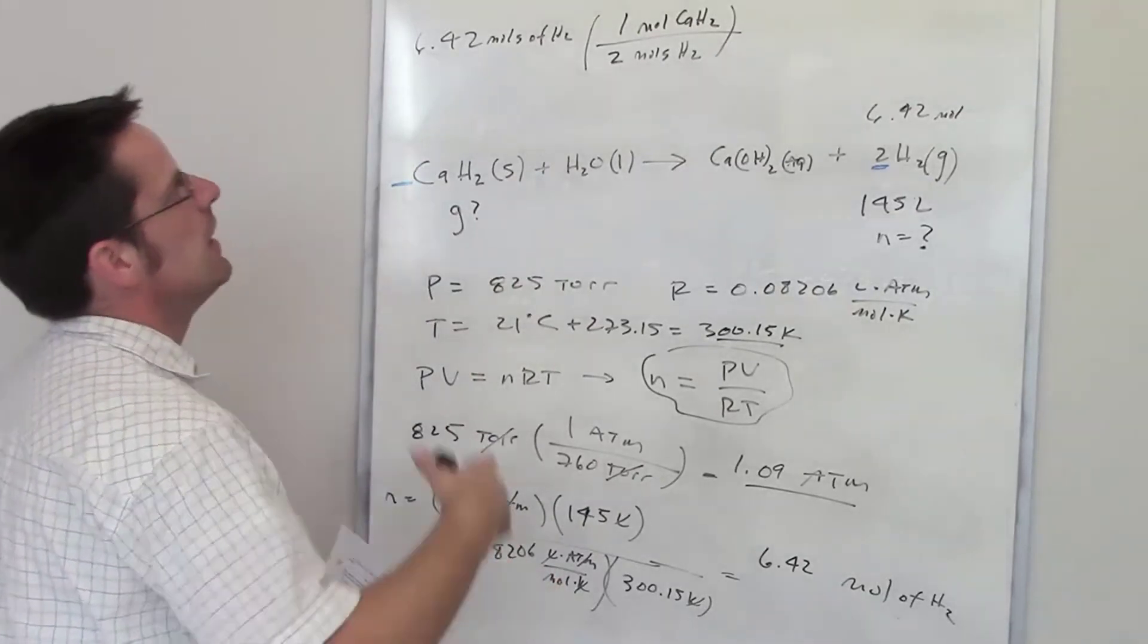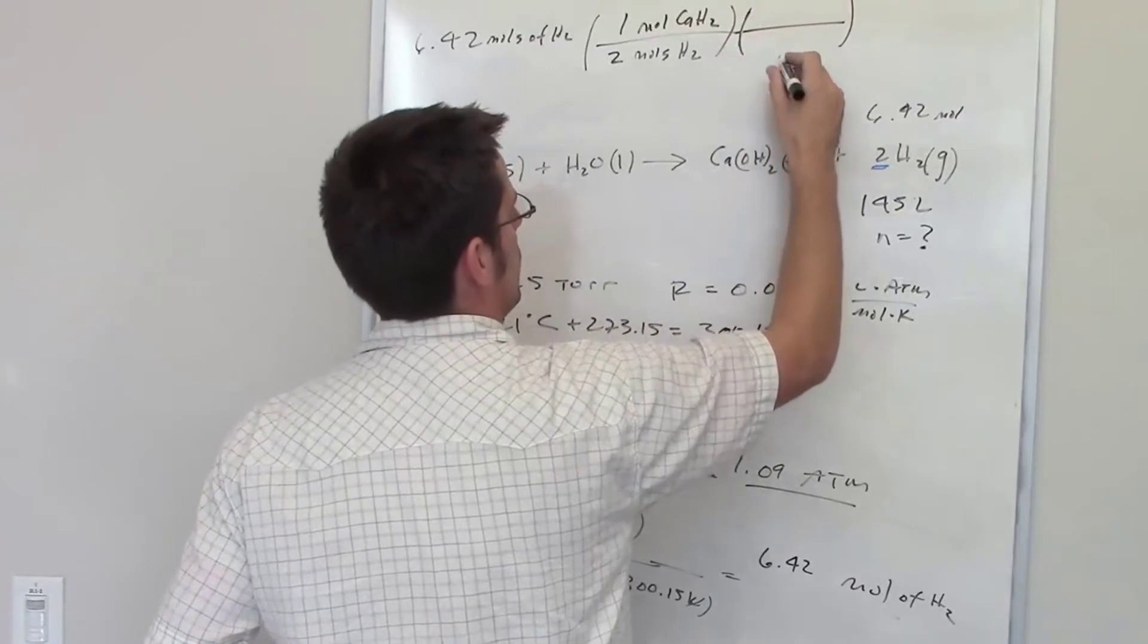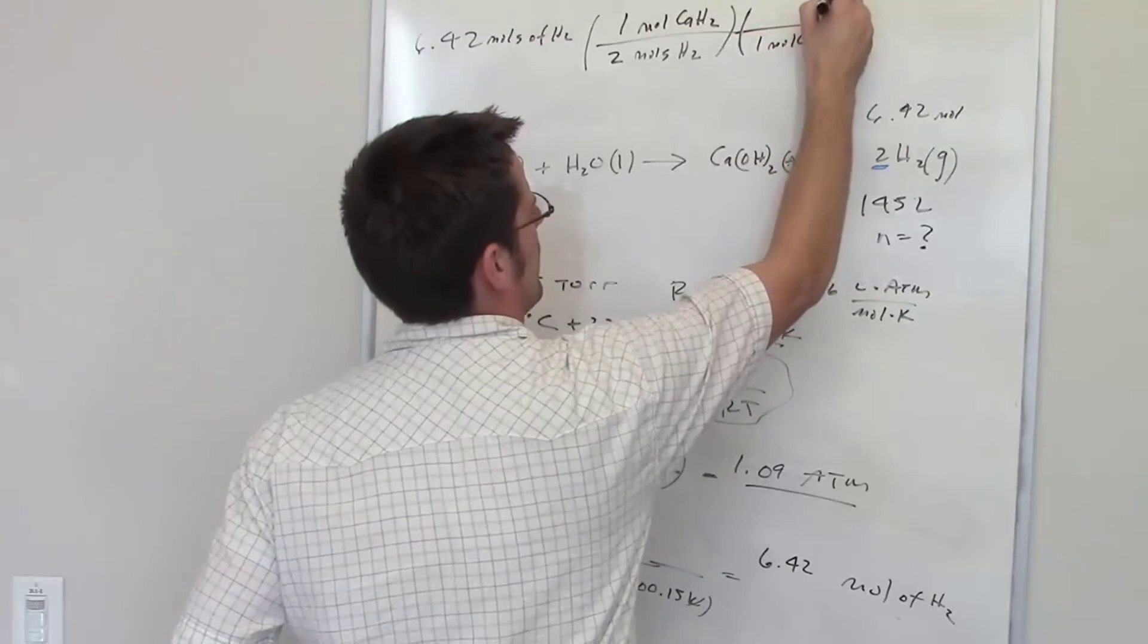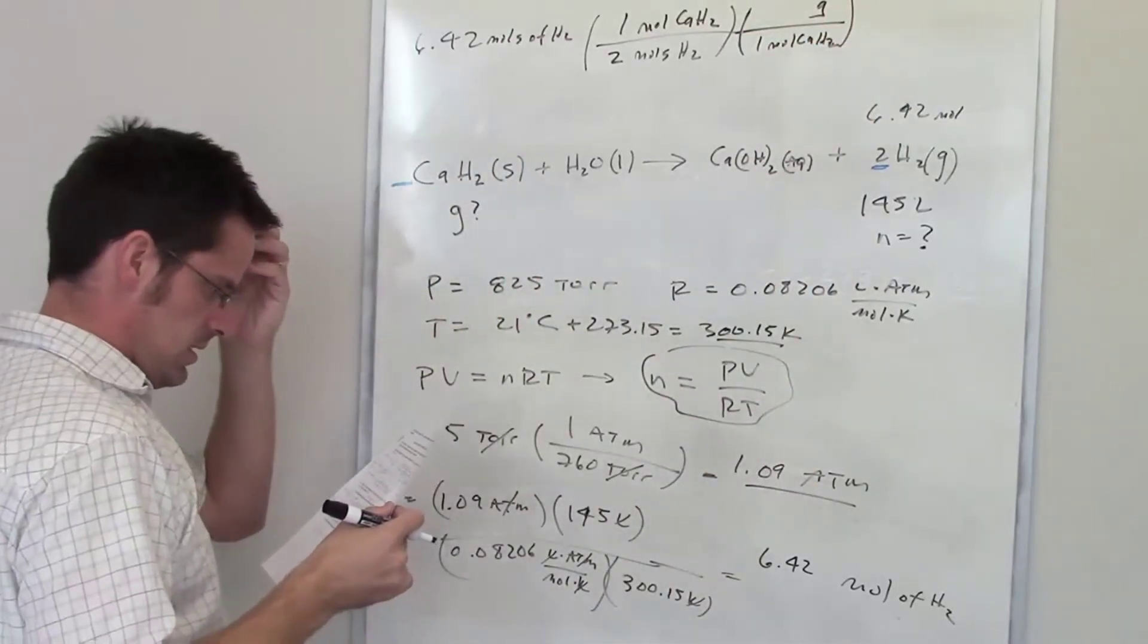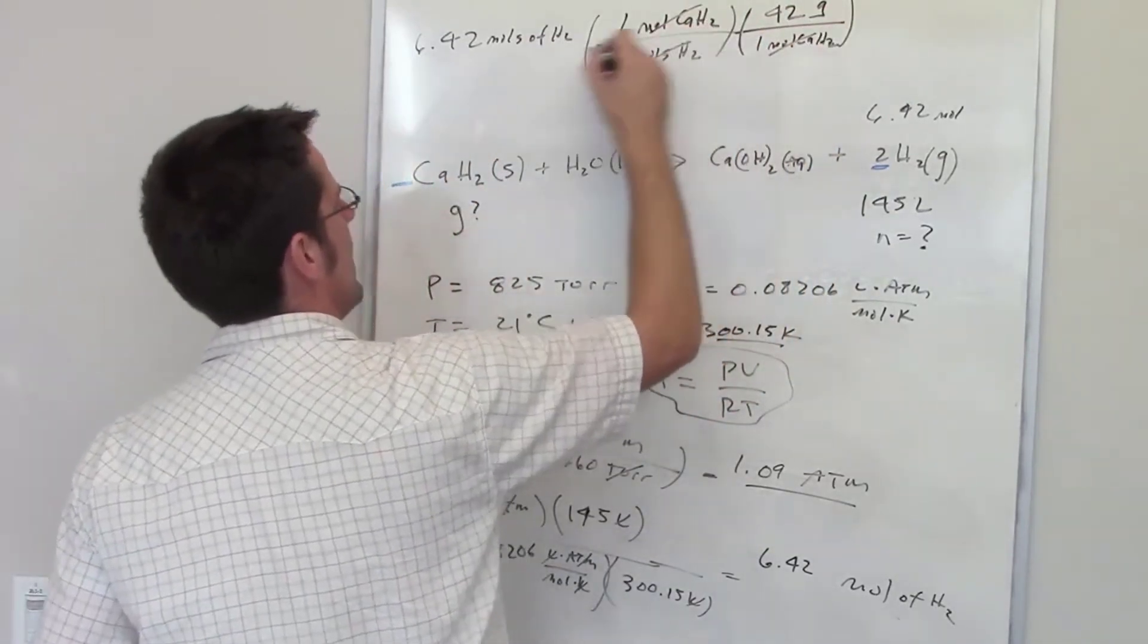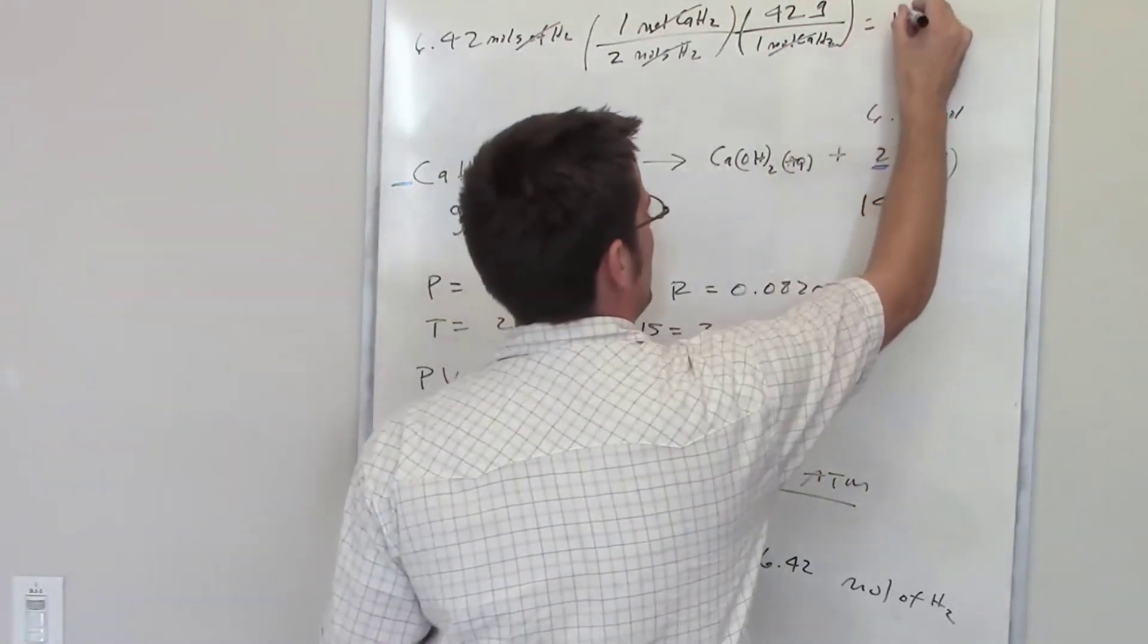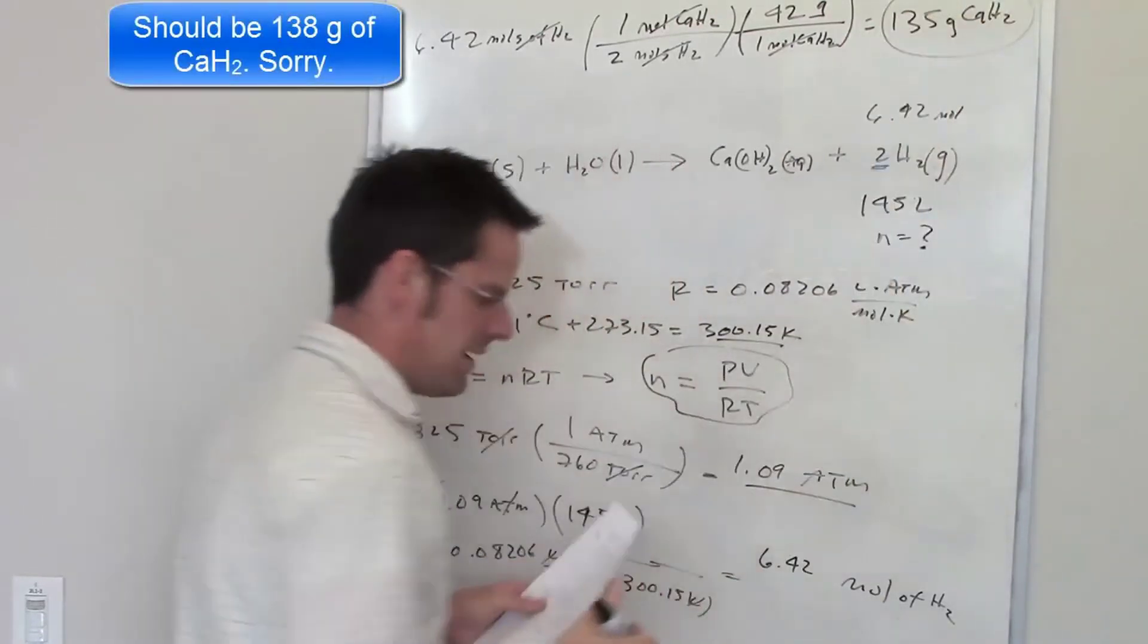I'm not gonna stop there, however, because the question asked me how many grams. So I'm gonna write down: one mole of calcium hydride equals a certain number of grams. That number of grams is 42. So my moles of calcium hydride should cancel each other out, my moles of hydrogen gas should cancel each other out. I times all that through and I end up getting 135 grams of calcium hydride.